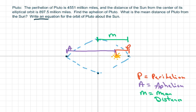Hi everyone, we're going to write an equation for the orbit of Pluto about the sun. So the elliptical equation, and we have to find the mean distance, the aphelion, and we're given the perihelion P, and the distance from the sun to the center.